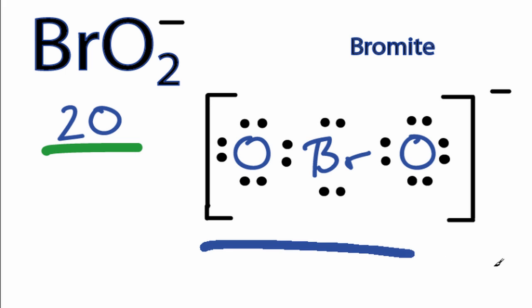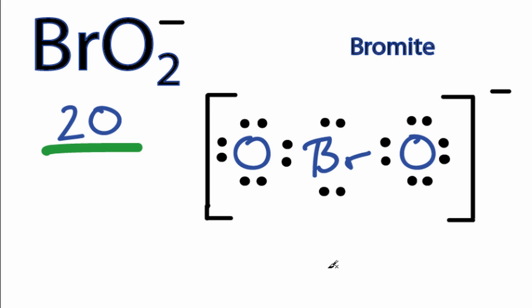In the last video, we said that this is the best Lewis structure for BrO2-. At first, it looks like it is. Each of the atoms has 8 valence electrons, so its octet is full, and we've used all 20 valence electrons we started with.